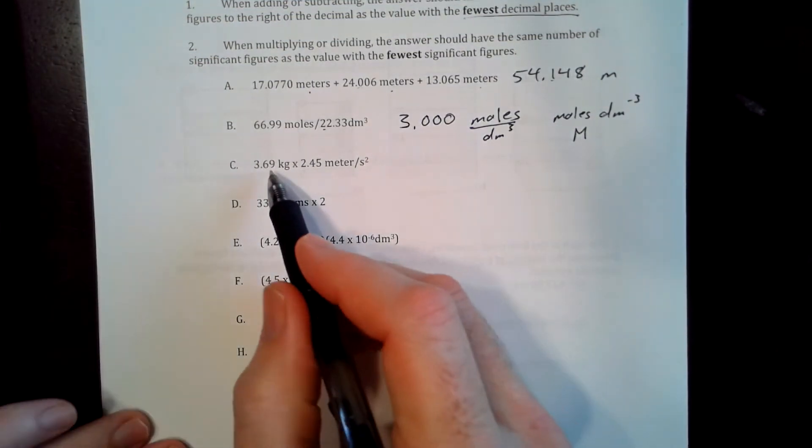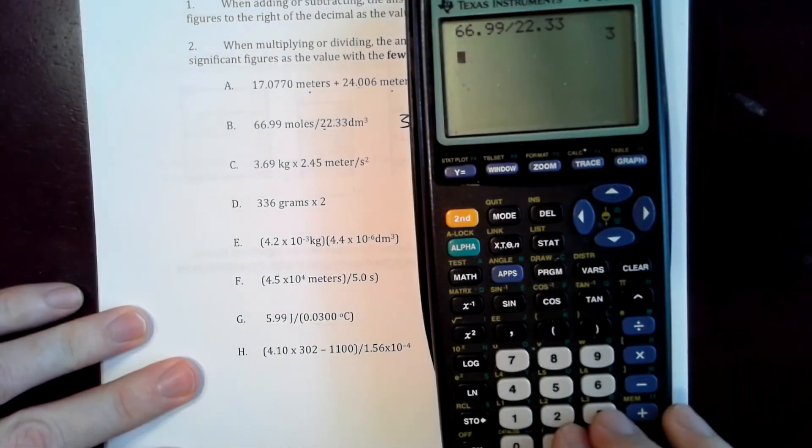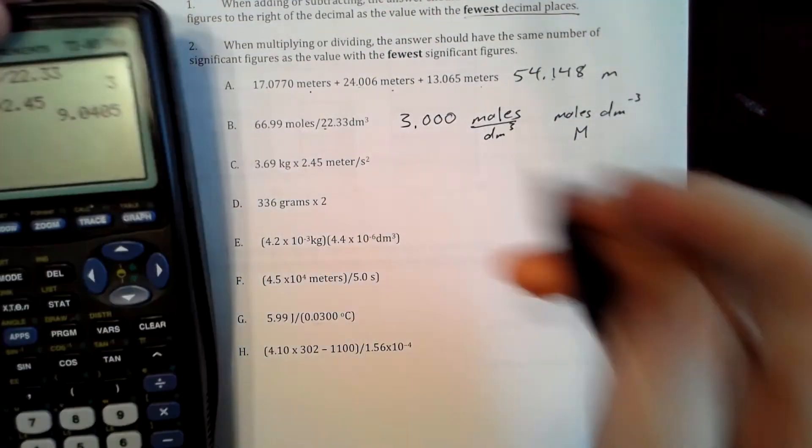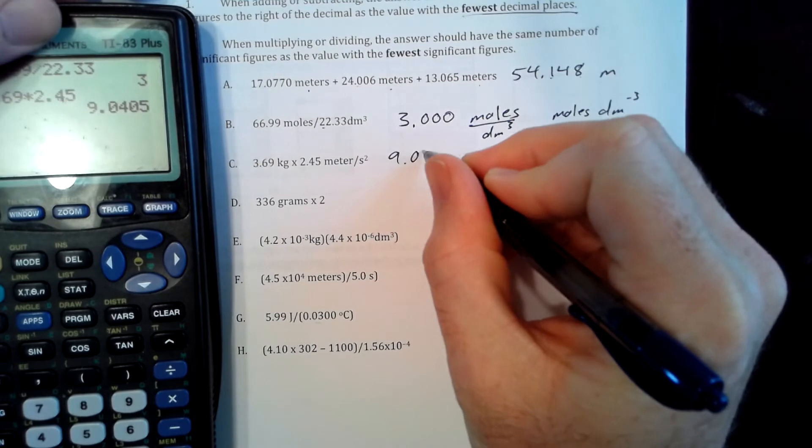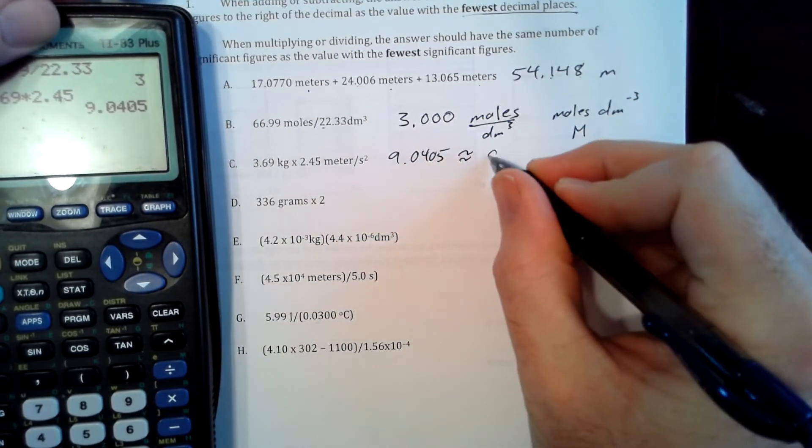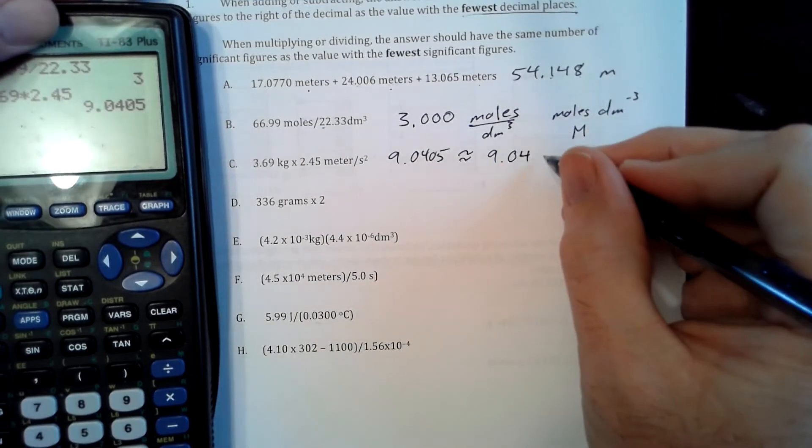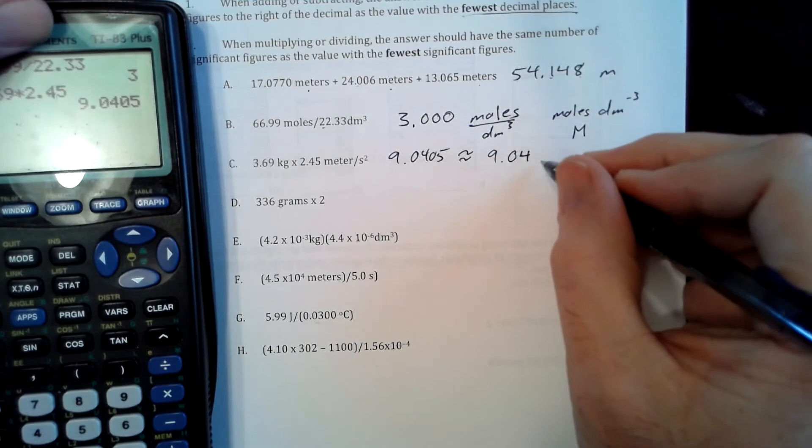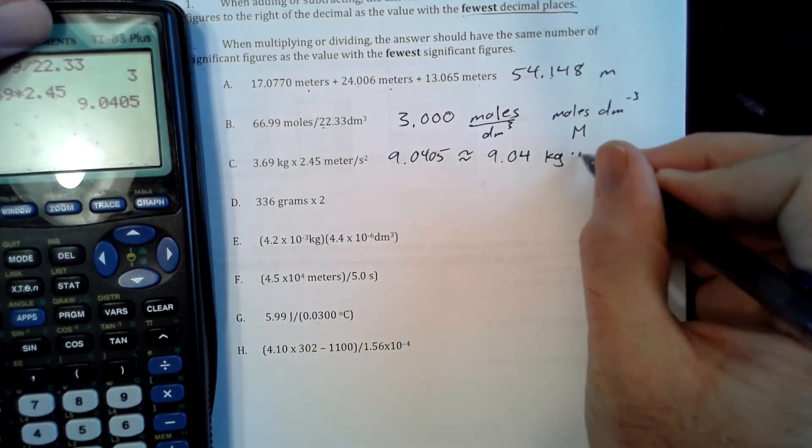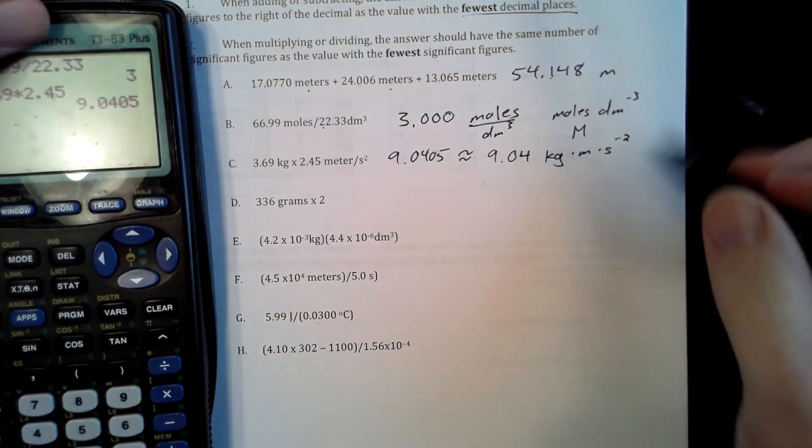So 3.69 times 2.45. That gives us 9.0405. We'll approximate that to 9.04. And that's going to be kilograms times meters times second, times inverse second squared, also known as Newton.